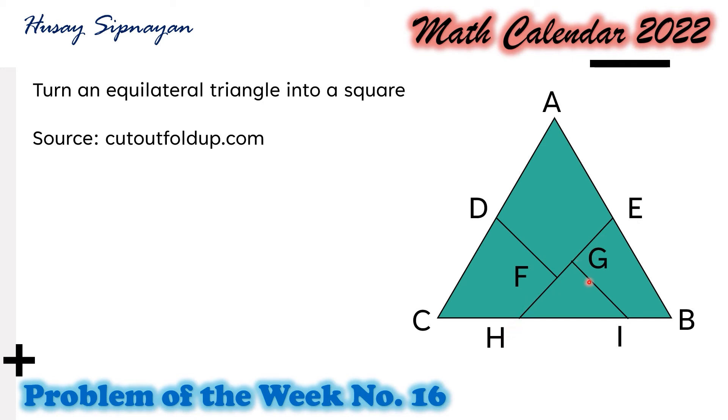The segments are drawn perpendicular to each other so that the corners will be the corners of the square that will be formed. Now, the location of D and E may exactly be specified as the midpoints of the two sides of the equilateral triangle.